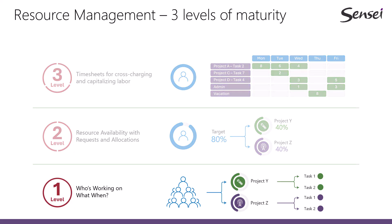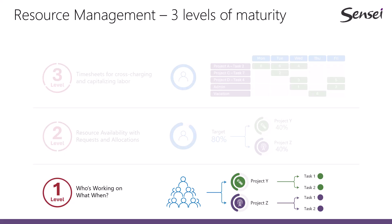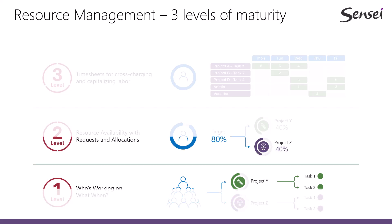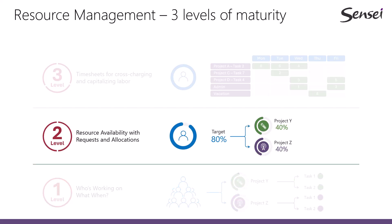Level 1 is all about visibility into the work across the organization — or, simply put, who's working on what when. These are the tasks and assignments from the various work management tools you may be using across project teams. Level 2 is resource availability through a formal process of requests and allocations. Think of this as your resource budget or your resource plan that outlines where you want people to spend their time.